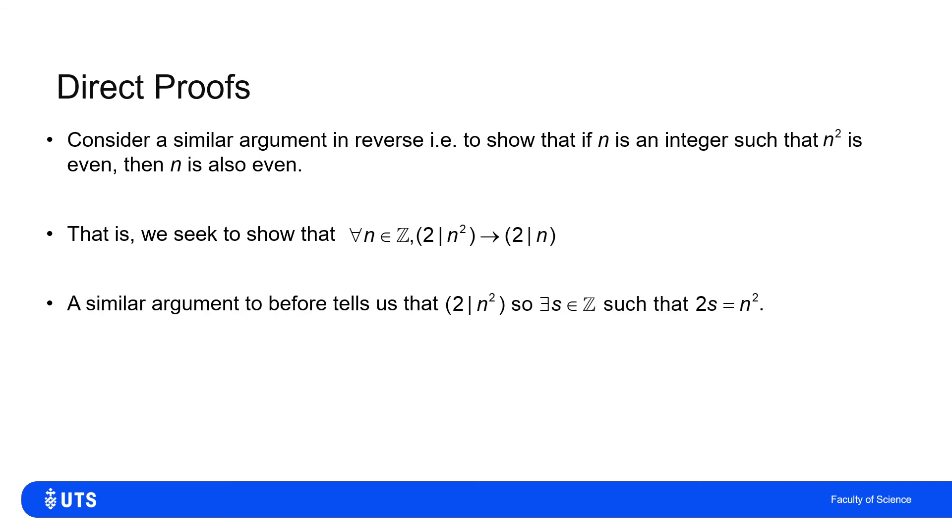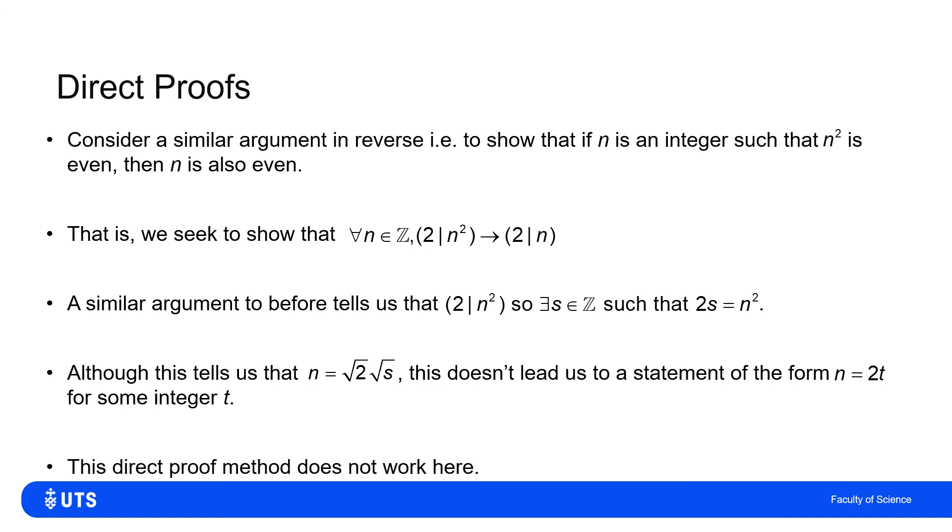So if I try to do this by direct proof, very similar to what we did on the last slide, I say, well, OK, two divides n squared. So that tells me that there's another integer s such that two s is equal to n squared. But now instead of trying to go from a statement about n to a statement about n squared, I'm going the other way. So I have to square root the n squared. So all this tells me is that I know that my integer n is equal to the square root of two times the square root of my integer s. But that isn't telling me that n is two lots of anything for some other integer, in this case t. So it's not wrong, that statement. But it doesn't help me say, OK, I can rewrite n as two lots of t, therefore n is even. This method of proof sort of fails me here. So I can't use the direct method of proof.